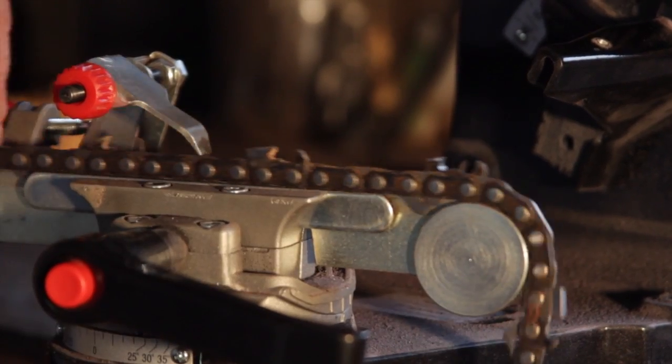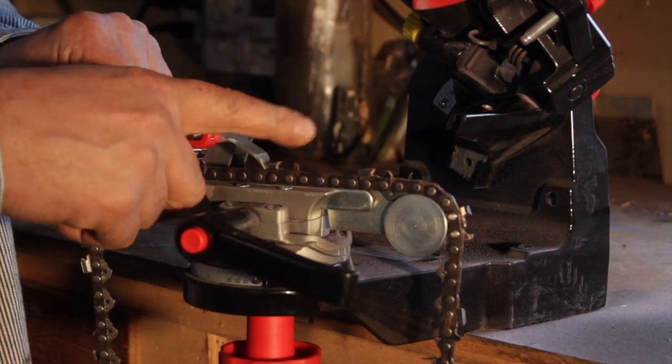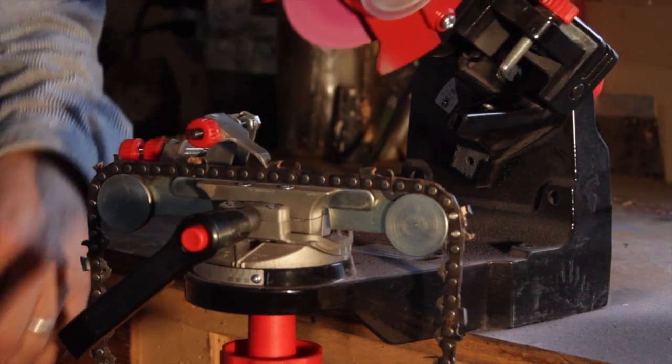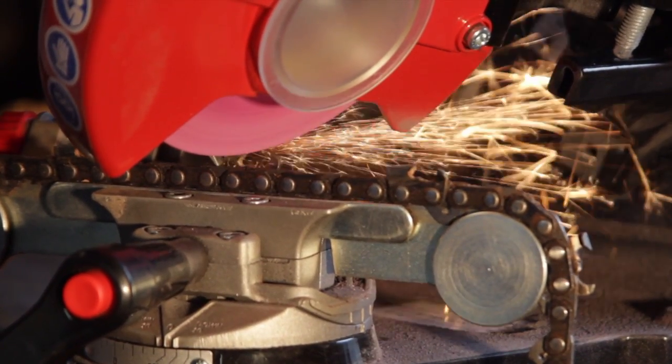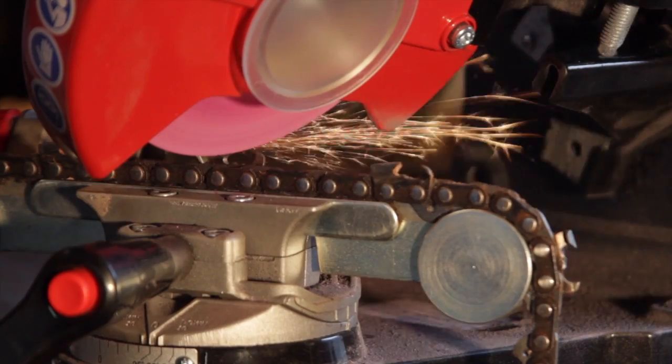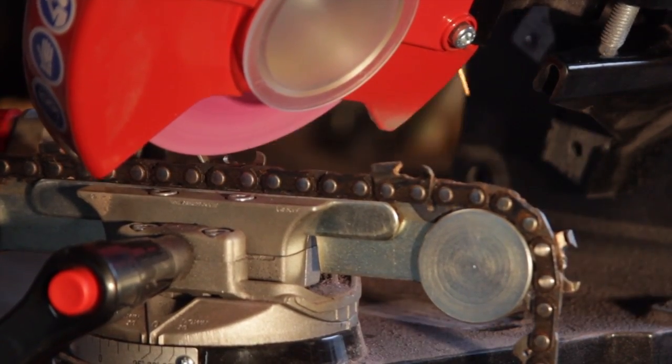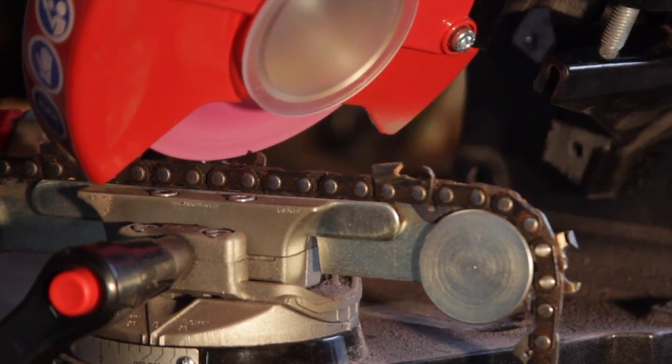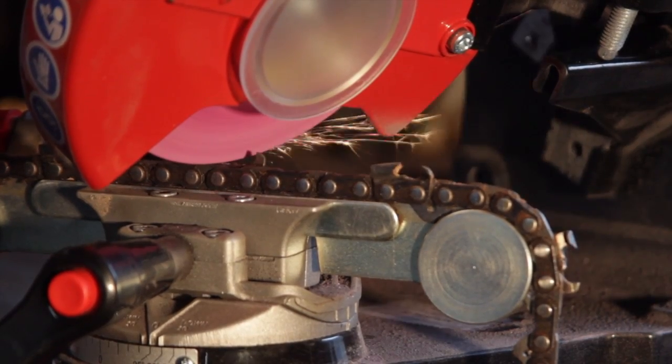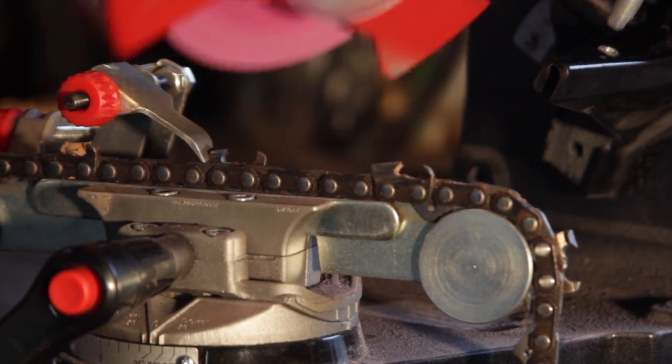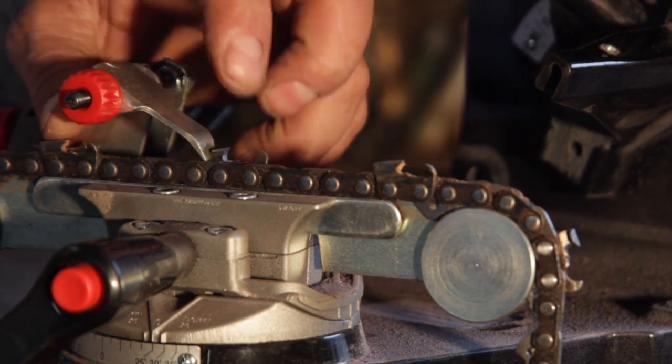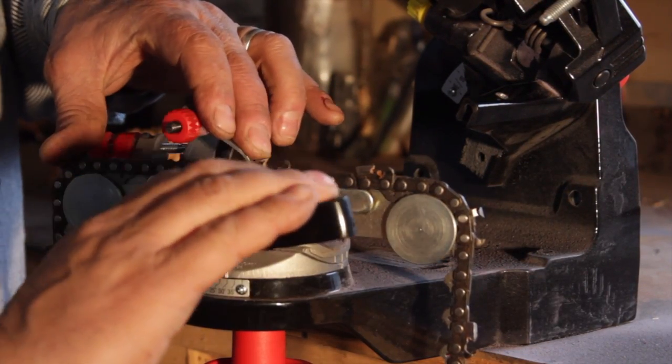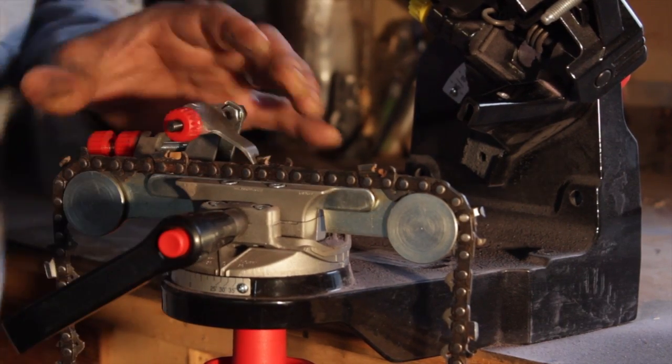So we just skip a tooth because they're alternating. Tighten it up. And go for the next one. Alright. That's looking good right there. Skip a tooth. Make sure it's down. Tighten it up.